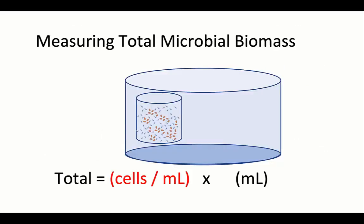If we want to answer the question of identifying which microbes have changed in abundance across our experimental conditions, we need to have some knowledge of how much the total microbial biomass has changed. If we're lucky, we can estimate this quantity by estimating the volume in our system and use instruments such as qPCR, spike-ins, or flow cytometry to estimate the microbial cells per unit volume.